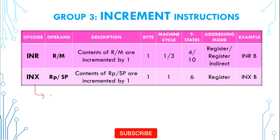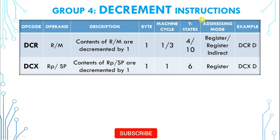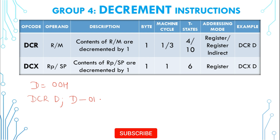There will be no effect on flags for INX. Now let us see another instruction: decrement instructions. These instructions are used to decrement the contents of the operand by 1. Similar to the INR instruction, the DCR instruction — where the operand can be any general purpose register or memory location — will decrement the contents of the operand by 1. Example: DCR D. Let us assume that register D has 00 hex. After writing the instruction DCR D, the source operand contents will be decremented by 1 and the result will be saved in the same place, that is register D.